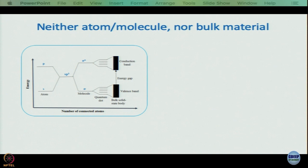In the next few modules, we want to talk about semiconductor nanocrystals and their ultrafast processes. As you know, nanomaterials are strange things — they are neither like atoms and molecules, nor really like bulk material.